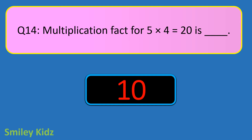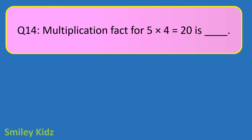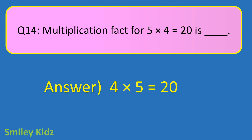Question number 14. Multiplication: 5 times 4 is equal to 20. The related fact is blank. Your time starts now. And your time is up. The right answer is 4 times 5 is equal to 20. Multiplication: 5 times 4 is equal to 20, so 4 times 5 is equal to 20.